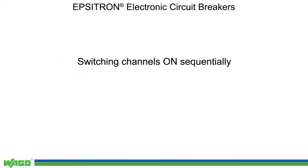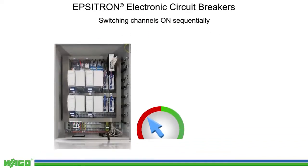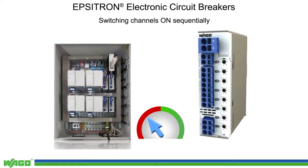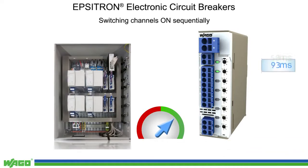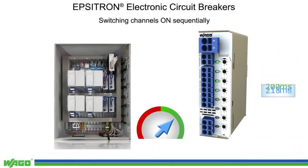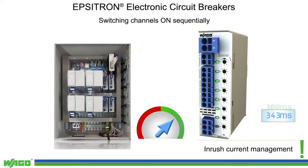Furthermore, WAGO's ECBs provide better inrush current distribution. When an input voltage is applied to the ECB, the device will sequentially switch on the inputs with a delay time depending on the actual current. This eliminates the need to significantly oversize the system's power supply.